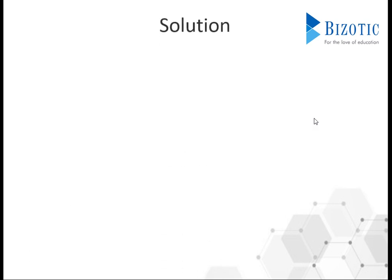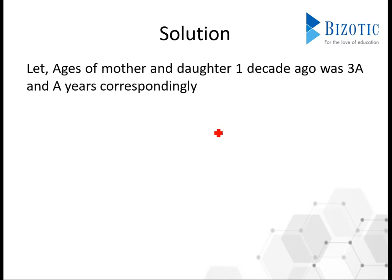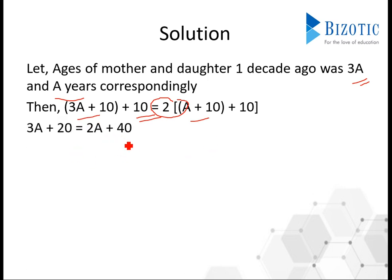We've solved a very similar problem before. Let's assume the daughter's age as 'a' and the mother's age as thrice 'a' a decade ago. Adding 10 years to both for the present and future, we form equations. Ten years hence, the mother's age will be twice the daughter's age. Simplifying gives: 3a + 20 = 2a + 40, so a = 20.